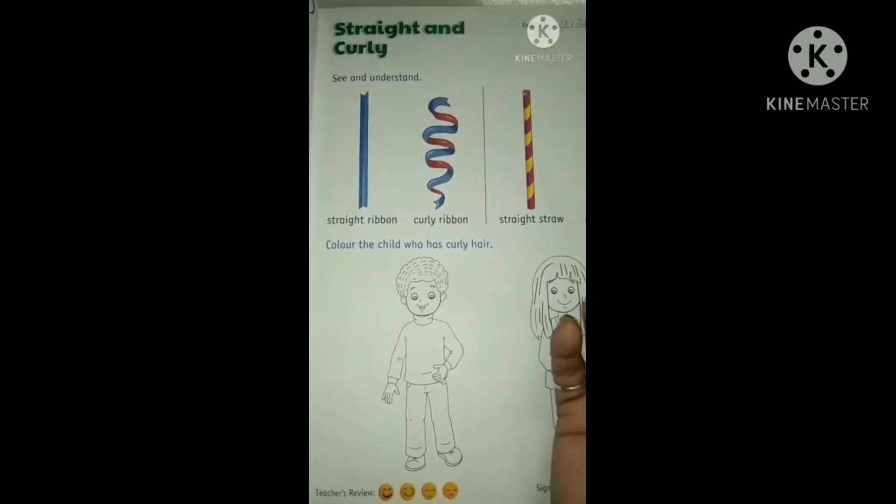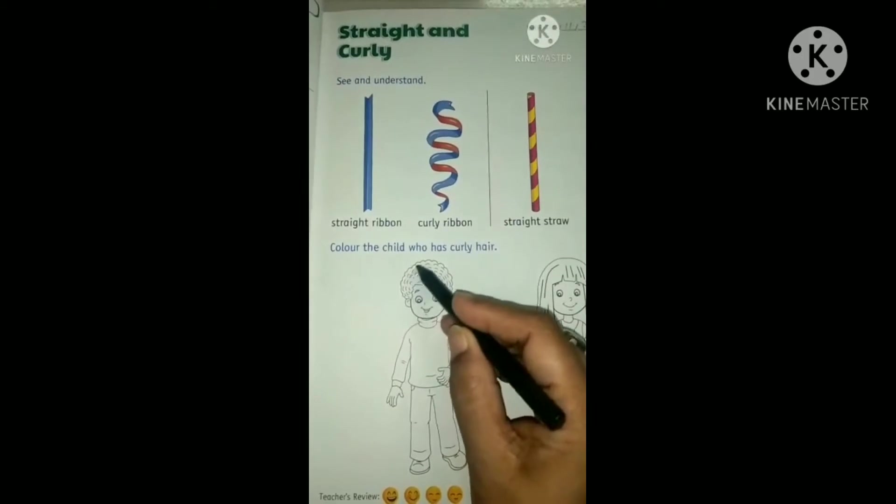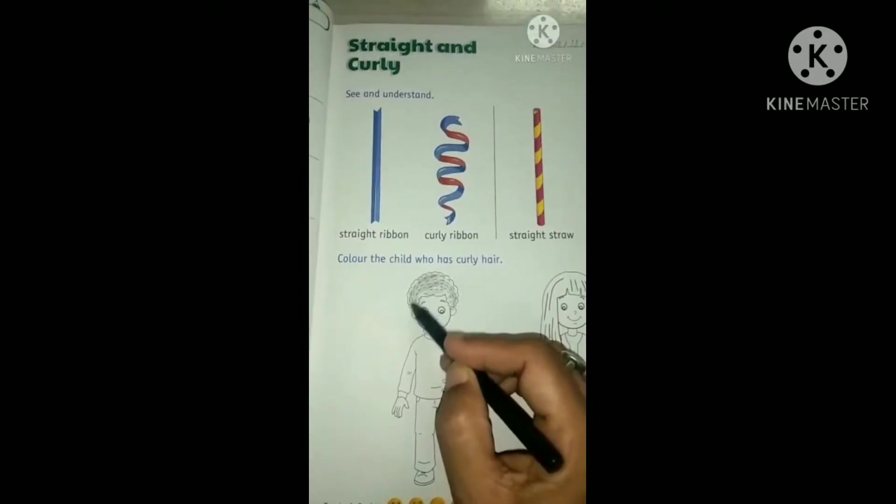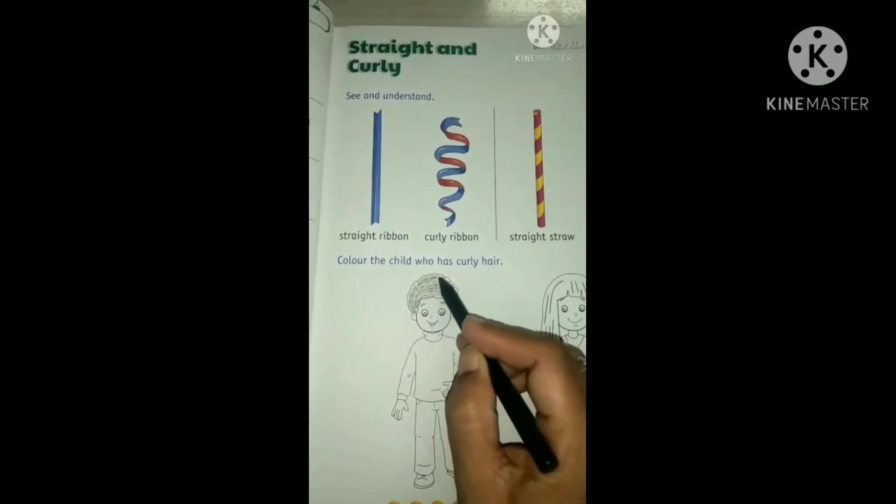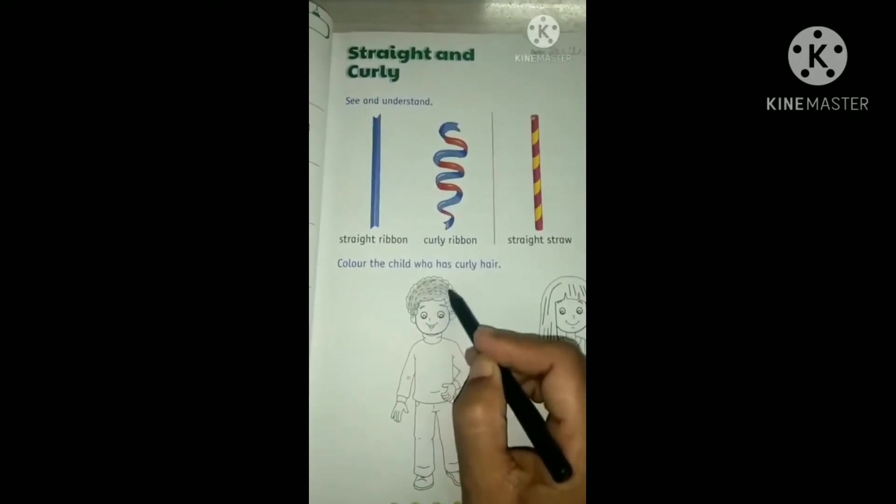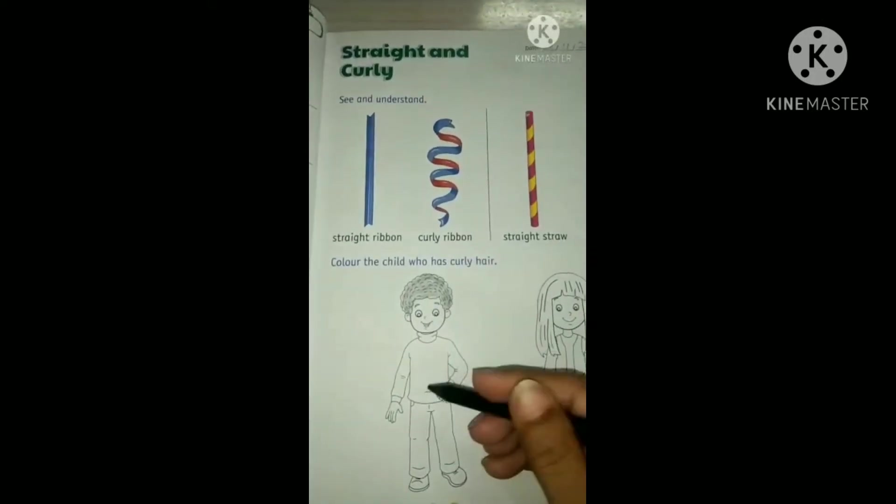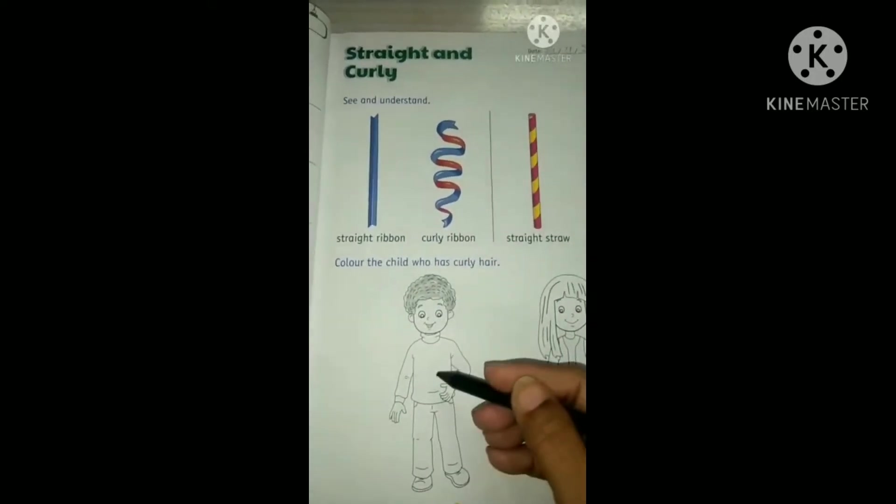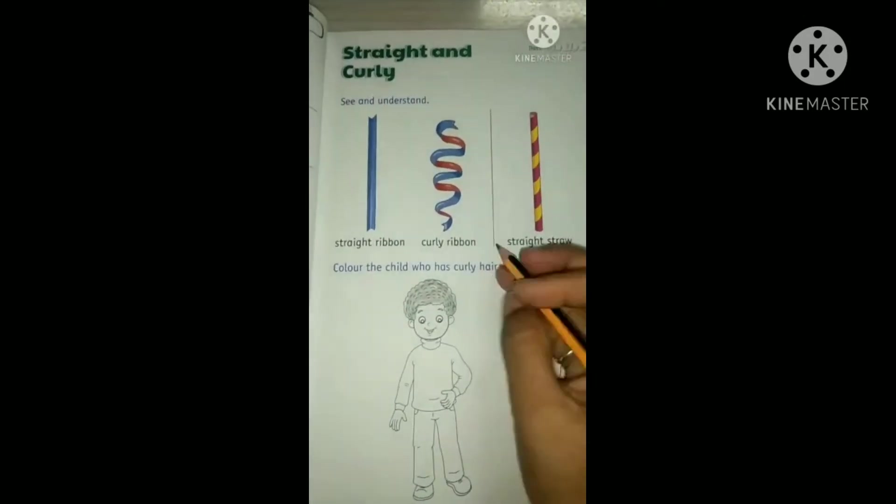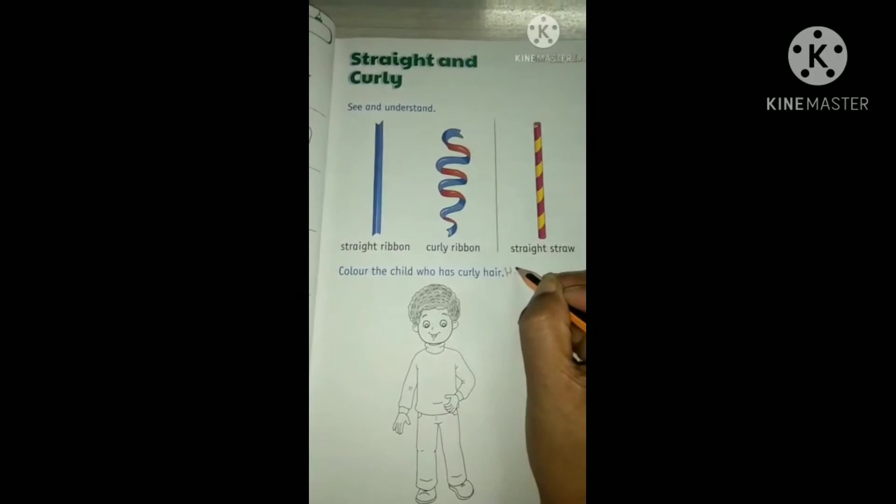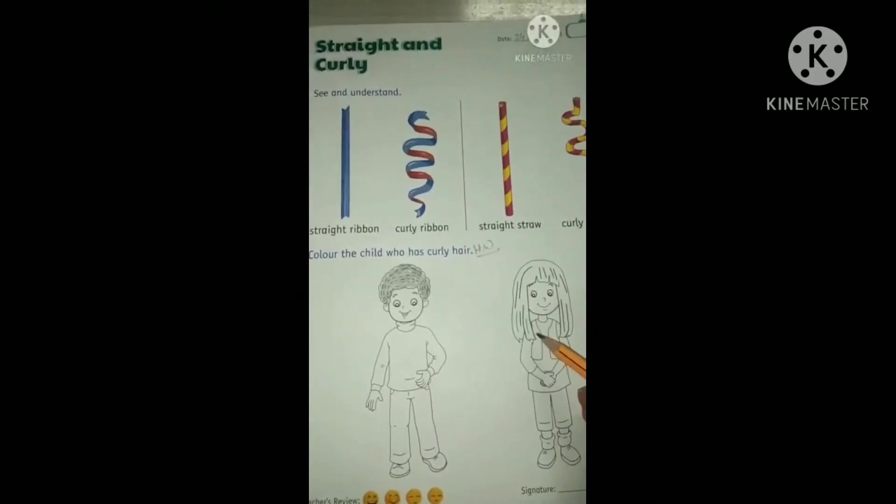Okay, so first we will use black color for his hair. Color his curly hair with black crayon, okay? And now color his clothes too. You can use any color. This one is your homework. So color only this boy, not this girl, okay?